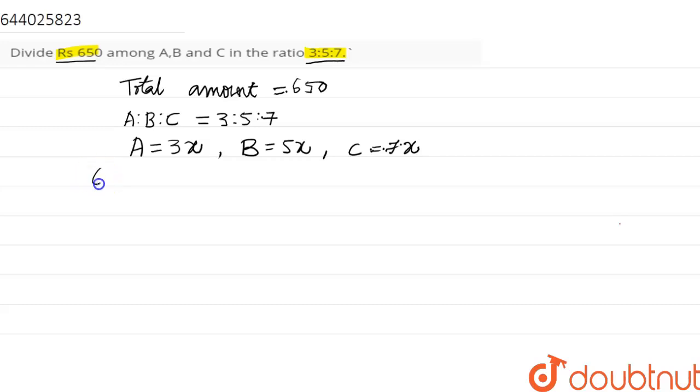So we get 650 equals 3x plus 5x plus 7x. This is nothing but 650 equals 15x.